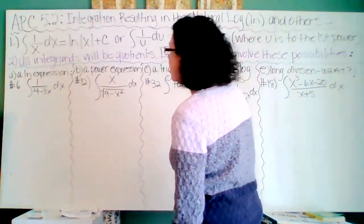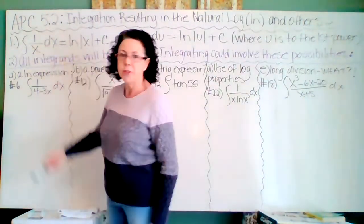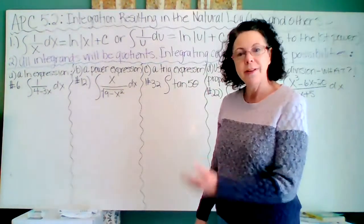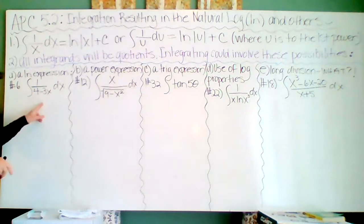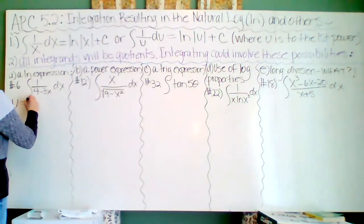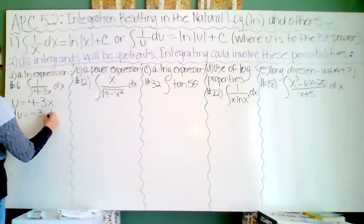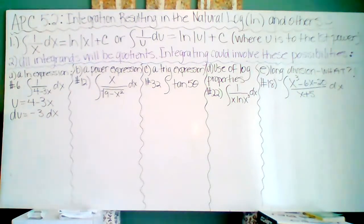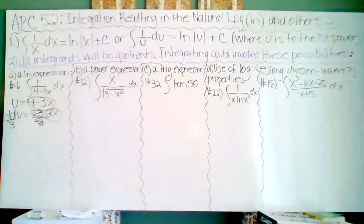On assignment A, you could end up with a natural log expression — one over some expression in the denominator to the first power, like number 6 in your book. For number 6, a u-substitution of the denominator makes sense: u equals 4 minus 3x, and du equals negative 3 dx, so I'll divide by negative 3 to get negative one-third. I think I have everything I need for a perfect u-substitution.